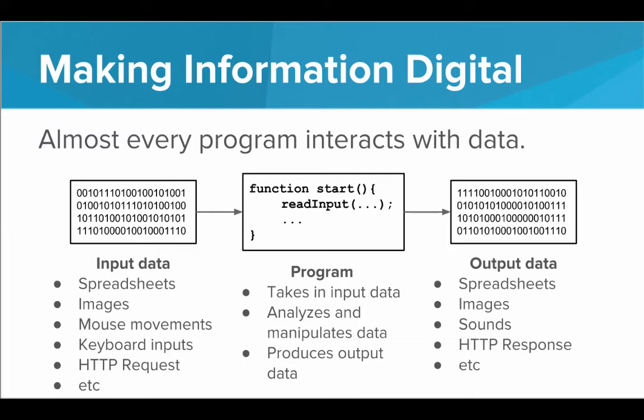And again, that output data is going to be just zeros and ones. But depending on what type of file it is, that could represent a spreadsheet. That could represent a brand new image. It could represent a brand new sound. It could be sending sounds to speakers that will generate vibrations. Or it could be sending out an HTTP response back over the network to whatever device it received. This is the general story of a program.